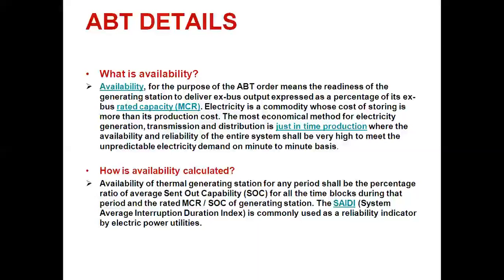The main concern is that the cost of production of electricity corresponds to the cost of storing that electricity. The concept of availability occurred in order to signify those unscheduled power requirements. Availability for the purpose of the ABT order means the readiness of the generating station to deliver ex-bus output expressed as a percentage of its ex-bus rated capacity (MCR).